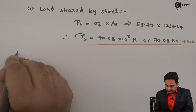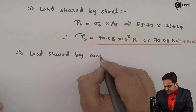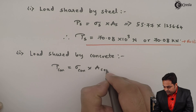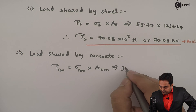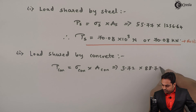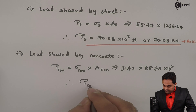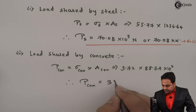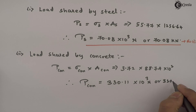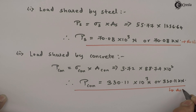Next, load shed by concrete = σ_c × A_c = 3.72 × 88.74 × 10³ = 330.11 × 10³ N, or 330.11 kilonewton. This is the fourth answer.